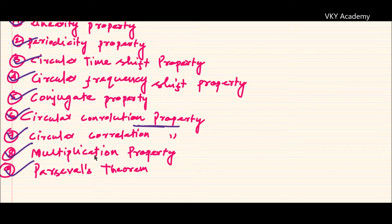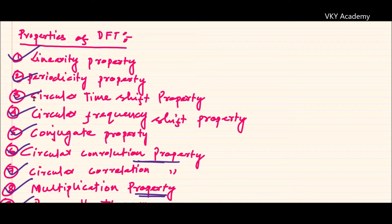The ninth property is the multiplication property, which states that multiplication of two discrete-time sequences in the time domain is equal to convolution in the frequency domain. We will discuss each and every property one by one with proof.